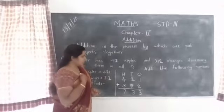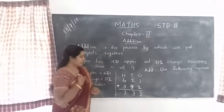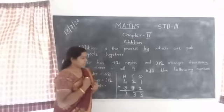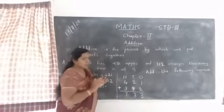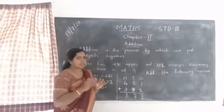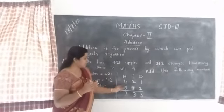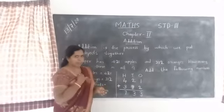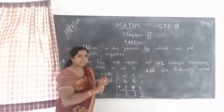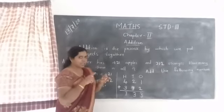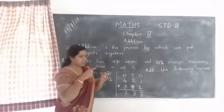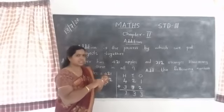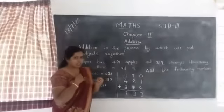If you do not know the addition table, first take the larger number in your mind and the smaller number on your fingers. For example, if you do not know 4 plus 3, take 4 in your mind and then count on 3 fingers: 5, 6, 7. Have you understood?